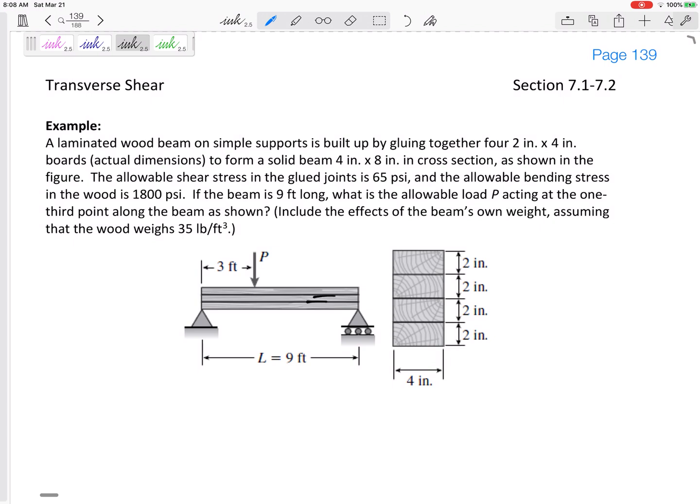You can see from the side, it's four two by fours glued together. The allowable shear stress in the glued joints is 65 psi. The allowable bending stress in the wood is 1800 psi. It's trying to find, if the beam's nine feet long, what is the allowable load P acting one-third along the beam. And we have to include the effect of the weight of the beam. We don't do that much. We'll talk about how to do that.